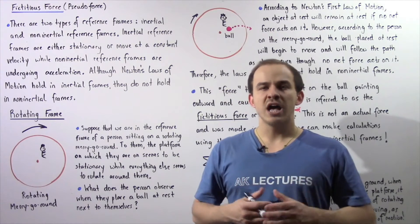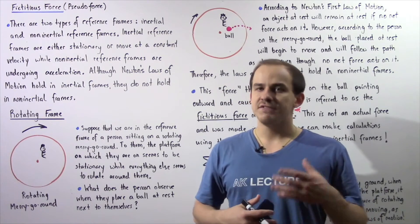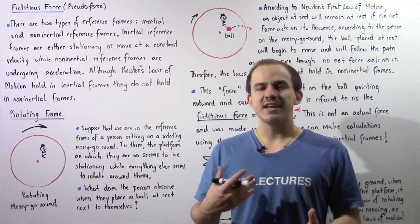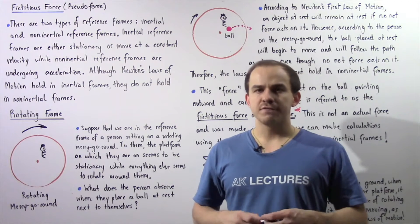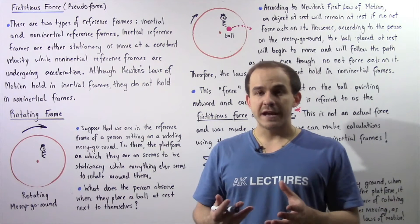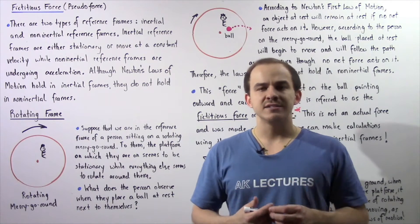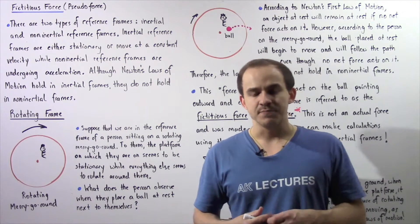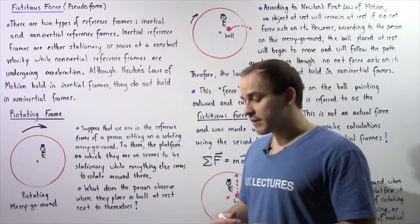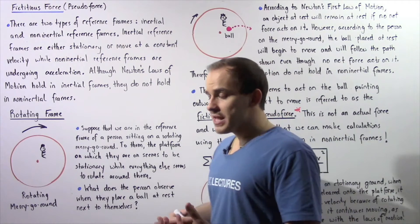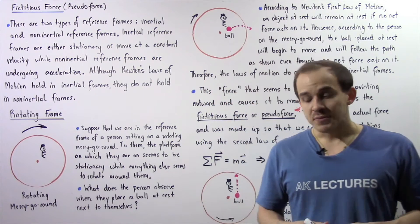In physics, there are two types of reference frames: inertial and non-inertial. An inertial reference frame is a frame that is either stationary or moving with a constant velocity. On the other hand, a non-inertial reference frame is a frame that is continually accelerating.